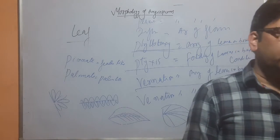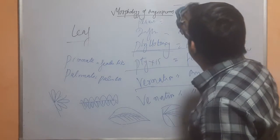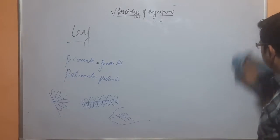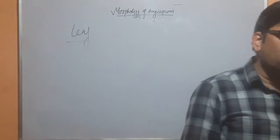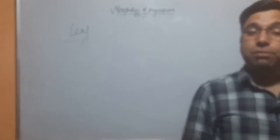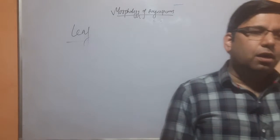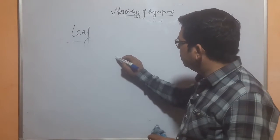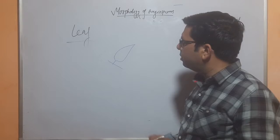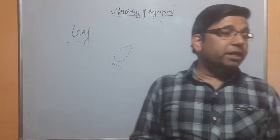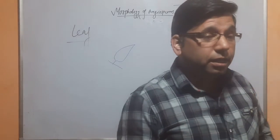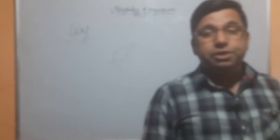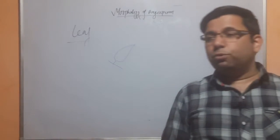Let's move towards leaf types. Leaves are of two types: simple and compound. In a simple leaf, the lamina is undivided. In a compound leaf, the lamina is divided. We have pinnate compound leaves — unipinnate, bipinnate, tripinnate — and palmate compound leaves — trifoliate, unifoliate, quadrifoliate, and multifoliate leaves.